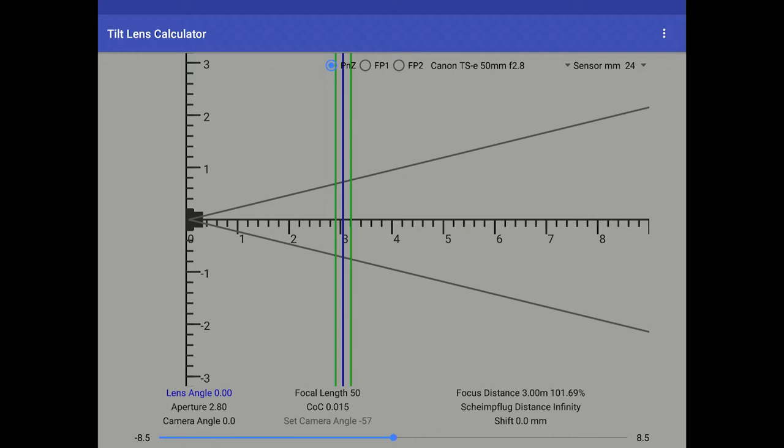Along the top, we have three radio buttons: P, N, Z, FP1, FP2. And there are two drop-down boxes, lens drop-down box and the sensor drop-down box. P, N, Z stands for pinch and zoom.